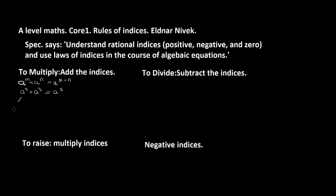To show how that works: a squared is a times a, and a cubed is a times a times a, giving us a to the power 1, 2, 3, 4, 5 — that equals a to the power 5. So something like a squared times a squared times a cubed will give us a to the power 5, because we add the indices.